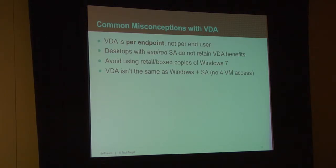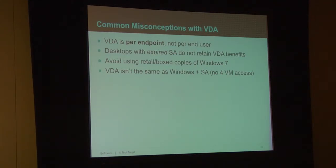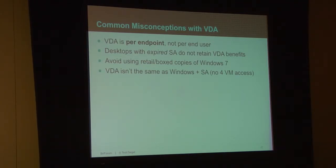VDA is not the same as Windows loaded plus SA — this is not very clearly documented. If you have XenClient, or a Windows or Mac desktop that needs Windows on it and wants to run four virtual machines, buying VDA is not going to get you that because VDA only gets you four remote virtual machines — it doesn't let you run four local virtual machines. People are just buying VDA for every desktop and not upgrading it, and in reality they're not getting the same benefits. VDA is correct when the endpoint is accessing virtual machines on XenDesktop or VMware View remotely; for localized use, you still want SA.